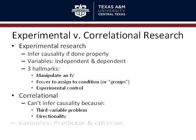Finally, for correlational research, the types of variables you're looking at — instead of an independent and dependent variable, you're looking at predictor variables and criterion variables. Again, at least one of each — at least one predictor, one criterion — and you could have multiple of each.